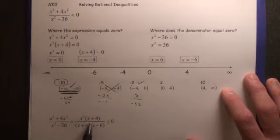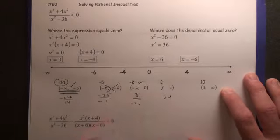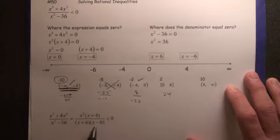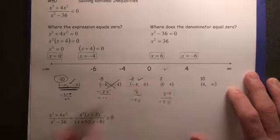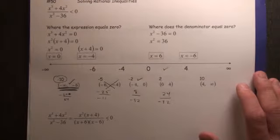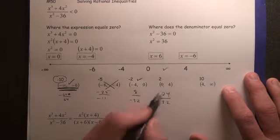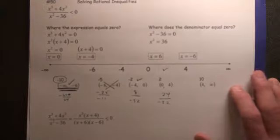Plug in 2. We're going to get 4 times 6, which is 24, over 8 times -4, which is -32. This is a negative number also, therefore this is a correct interval. So actually, 0 to 4 would be a correct interval.